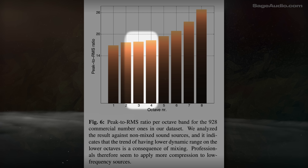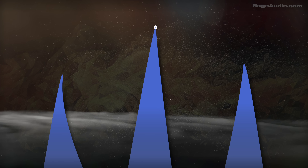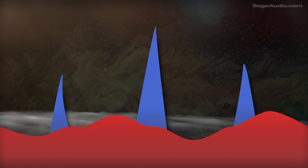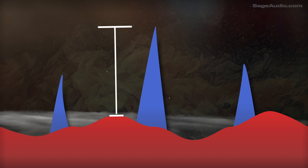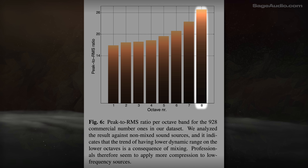Meanwhile, the highest octave has a ratio of about 28. Peak is the highest amplitude signal, while RMS is the average loudness over time. By measuring the two and comparing, we could find the crest factor, or amplitude difference, between the peak and RMS values. The higher this ratio, the greater the distance between the two, so to speak.